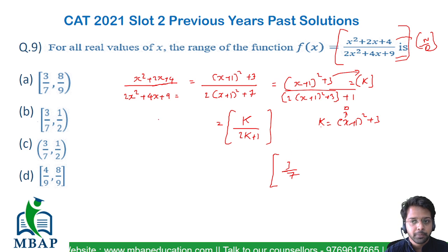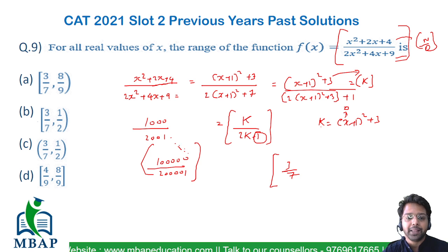Maximum totally depends on the value of x, but the larger the value of k, the less significant this one will be. For example, if k is 1000, 2k+1 will become 2001. If k is 1 lakh, this will become 2 lakh 1. This will obviously be any value which is less than 0.5.